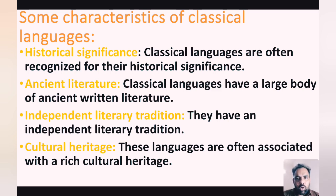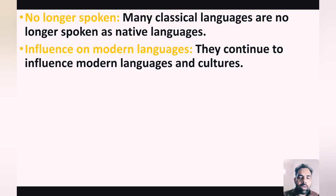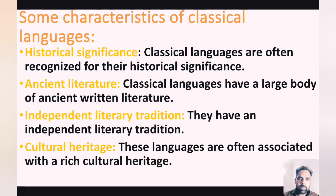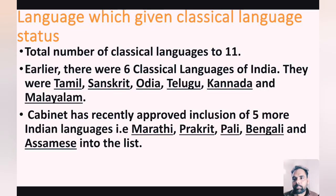Some characteristics of classical languages include: historical significance — classical languages are recognized for their historical significance; ancient literature — classical languages have a large body of ancient written literature; independent literary tradition; cultural heritage — these languages are associated with a rich cultural heritage; no longer spoken as native languages in the current era; and influence on modern languages — these languages must have had a great influence on modern languages.